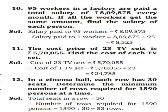Question number 12: in a cinema hall, each row has 30 seats. Determine the minimum number of rows required for 1,590 persons at a time. Total seats in a row = 30. Number of rows required = 1,590 ÷ 30 = 53 rows.